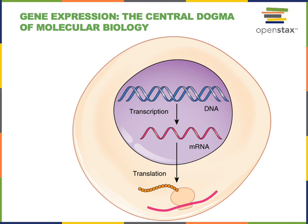A gene is a functional segment of DNA that provides information necessary to build a protein. The central dogma of molecular biology is the idea that genetic instructions move from DNA to messenger RNA in the process of transcription — the synthesis of RNA from a DNA template. The genetic instructions transferred into mRNA then exit the nucleus and are read by ribosomes in the process known as translation, which produces a protein. This flow from DNA to mRNA to protein is essentially the central dogma of molecular biology.